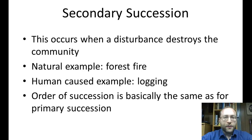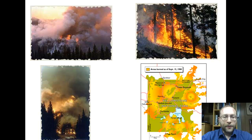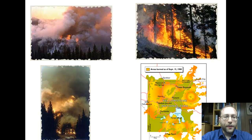The next kind of succession is secondary succession, which occurs when a disturbance destroys the community. This can be a natural disturbance like a forest fire, or a human-caused example like logging, where loggers come in and chop down the forest. The order is basically the same as primary succession — the difference is where you begin. In 1988, there was a huge forest fire in Yellowstone, and the area burned was larger than some of the smaller states. It lasted from July through September; while they were fighting it, they weren't able to put it out entirely — it was finally the first snowfall that put it out.